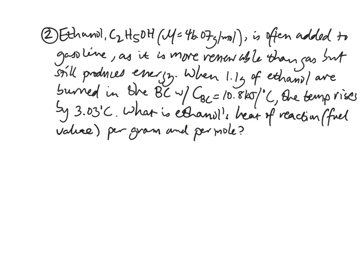So when 1.1 grams of ethanol are burned in the bomb calorimeter with the C of the BC equal to 10.8, so the same bomb calorimeter as before, the temperature goes up by 3.03 degrees Celsius. So what is ethanol's heat of reaction or its fuel value per gram and per mole?